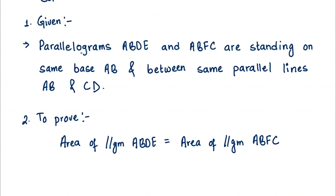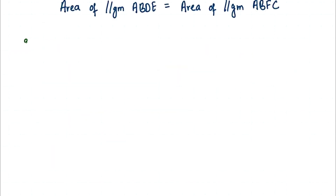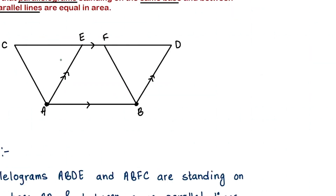Usually the third step involves any constructions needed; since we don't need any here, we go straight to the fourth step which is the proof. The way we can prove these two parallelograms are equal is if we can show that triangle 1 and triangle 2 are equal in area. If those two triangles are equal, we can add the middle trapezium — figure 3 — to both sides. Then 1 plus 3 gives the left parallelogram, and 2 plus 3 gives the right parallelogram, making them equal.